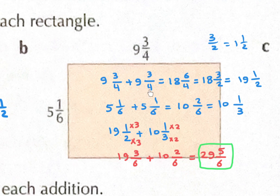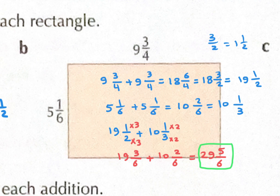For rectangle B: 9 and 3 over 4 plus 9 and 3 over 4 equals 18 and 6 over 4. Simplify 6 over 4 to 3 over 2, which equals 1 and a half. So the two lengths sum to 19 and a half. The two widths: 5 and 1 over 6 plus 5 and 1 over 6 equals 10 and 2 over 6, simplified to 10 and 1 over 3. Adding with common denominator of 6: 19 and 3 over 6 plus 10 and 2 over 6 equals 29 and 5 over 6.